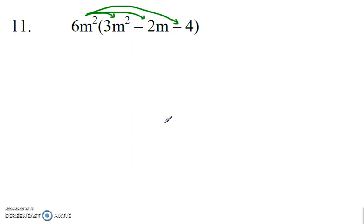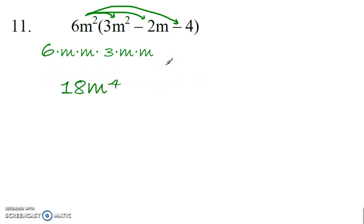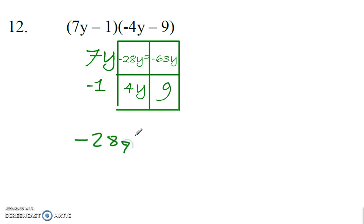Here, distributive property. 6m squared times 3m squared — remember that's 6 times m times m times 3 times m times m. So when you're multiplying the variables, that's when the exponents change. So now you have 6m to the 4th, then minus 12m to the 3rd, minus 24m. Can't simplify that any further because there are no like terms. Box method again: line them up, combine like terms, and we have negative 28y squared minus 59y plus 9.